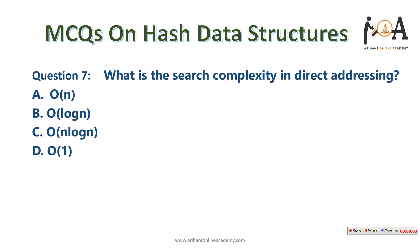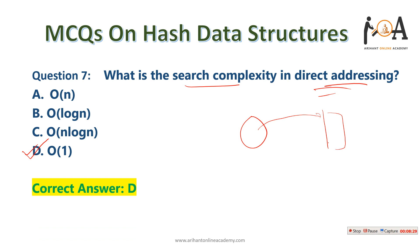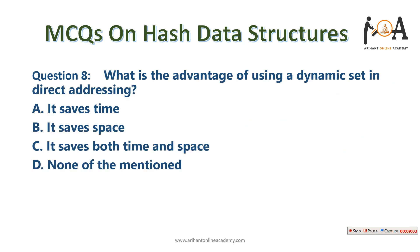What is the search complexity in direct addressing? It is O(1). If a key's value is 5, you can directly locate it at index 5. When the universe size is small, we directly map the key into the hash table, so the search complexity is O(1). For example, if a key is 789 and our table has 10 slots, you can directly reach index 9 without a full hash chain.